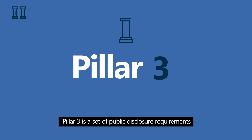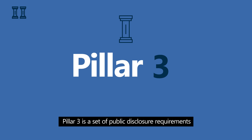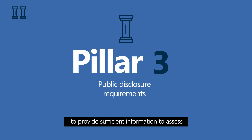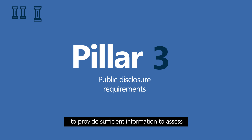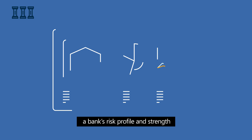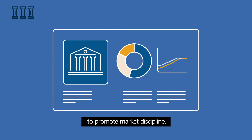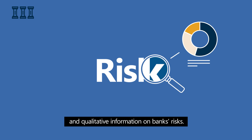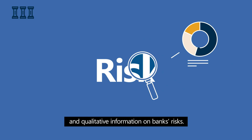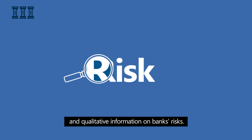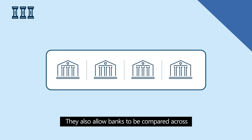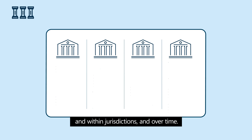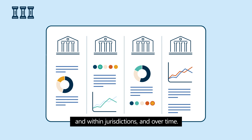Pillar three is a set of public disclosure requirements to provide sufficient information to assess a bank's risk profile and strength, to promote market discipline. These disclosures provide clear quantitative and qualitative information on banks' risks. They also allow banks to be compared across and within jurisdictions and over time.